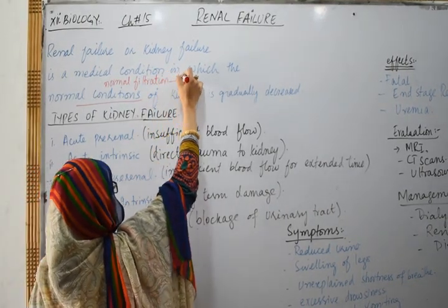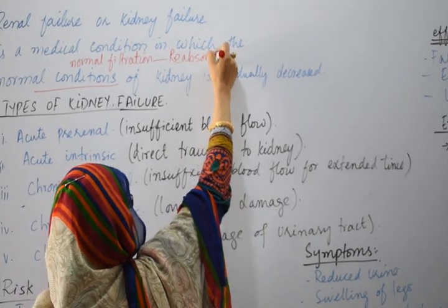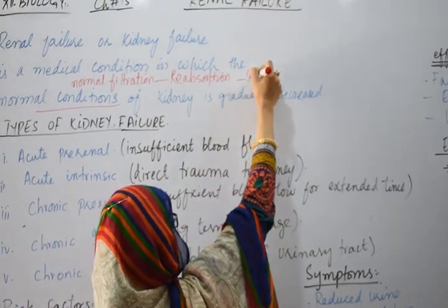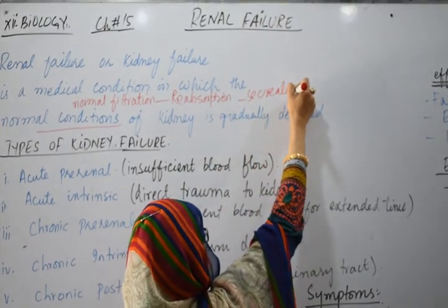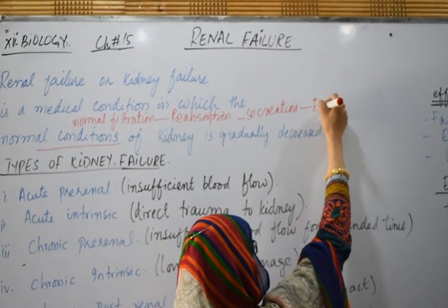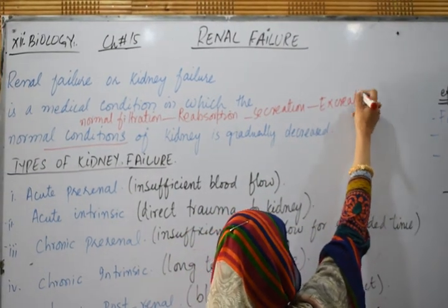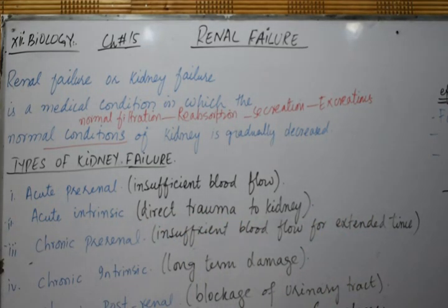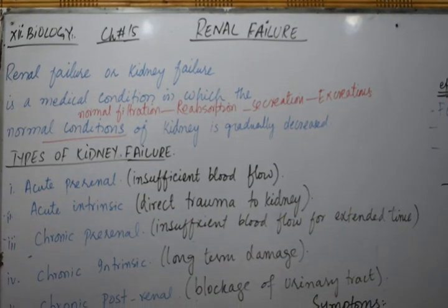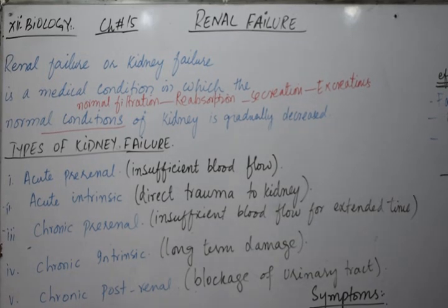Normal kidney functions include filtration, reabsorption, secretion, and excretion. If these normal conditions are not sustained by the kidney, or are gradually lost, then the kidney gets failed and renal failure occurs.